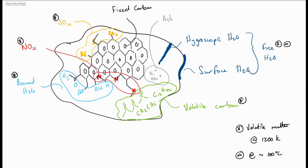We can accrue this free water, bonded water, volatile carbon, nitrogen and sulfur all together as volatile matter. And this is the matter that we get coming off the coal once we expose the coal to a temperature of 1200 Kelvin.